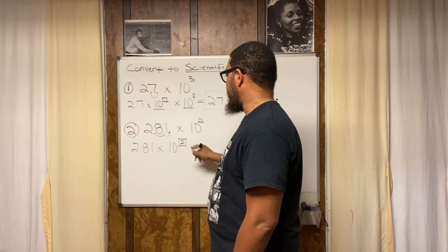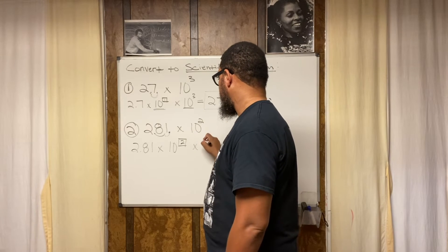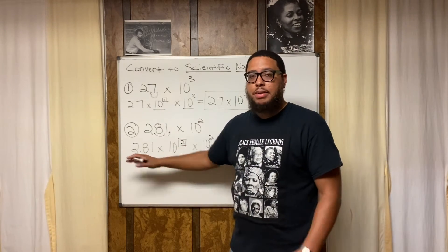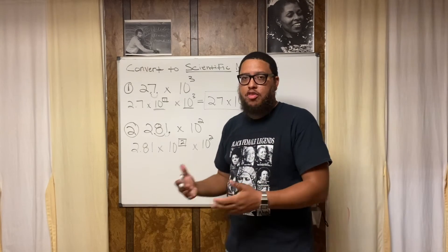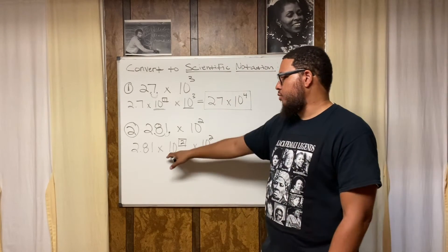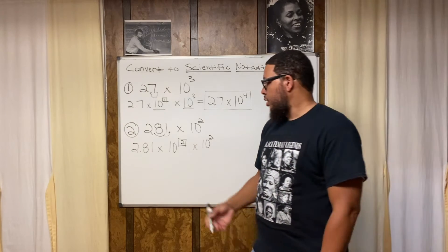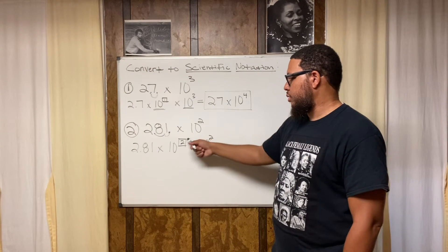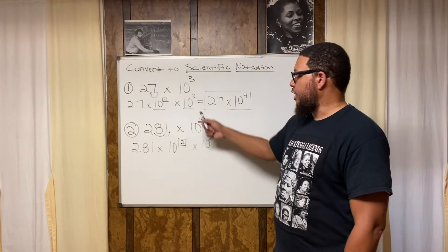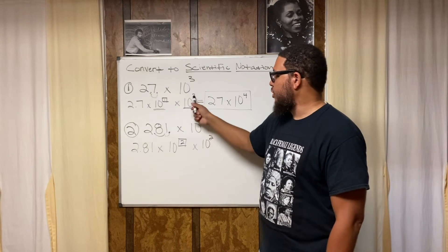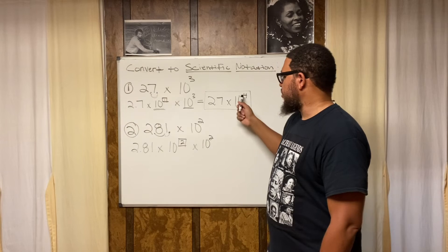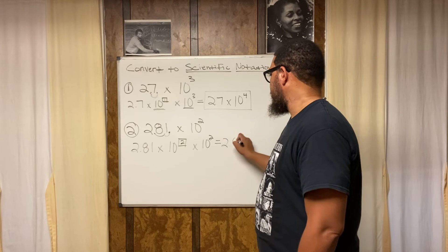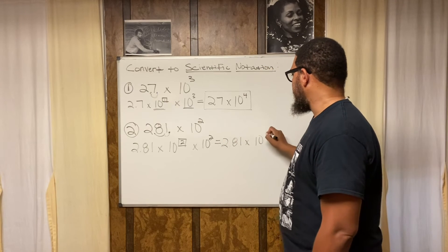So I've got 2.81 times 10 to the second. Then I bring this original 10 squared back into the mix and match up those 10s. We can't have two separate 10s — we know our exponent rules. So 10 to the second times 10 to the second: write the 10 one time and combine the exponents through addition — 2 plus 2 equals 4. So altogether we've got 2.81 times 10 to the fourth power.